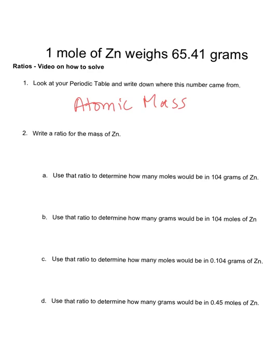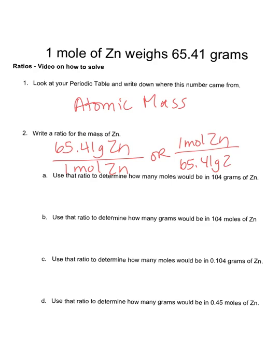Now I'm going to write this as a ratio. I could write this ratio as 65.41 grams of zinc in one mole of zinc, or I can write it inverted: one mole of zinc, 65.41 grams of zinc. It doesn't matter which way you write it. The important thing is always that things are equal.